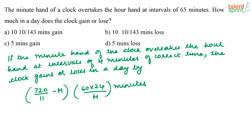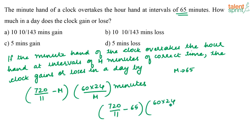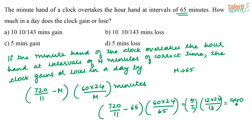If you remember this formula, solving such questions becomes very easy. Here, the minute hand overtakes the hour hand at intervals of 65 minutes, so m = 65. Substituting: (720/11 − 65) × (60 × 24 / 65), which simplifies to 5/11 × 12 × 24/13, giving 1440/143, which equals 10/143 minutes.